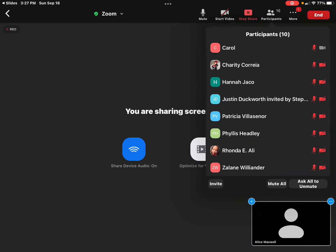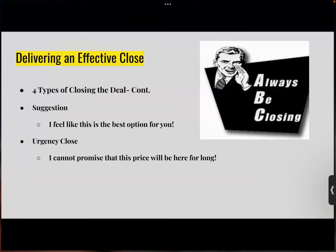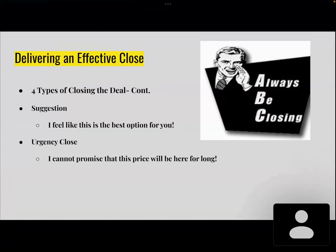Quick question from the audience: can you repeat the 4-2-1? The 4-2-1 process is four posts about travel — that can be anything from travel memes, best beaches, bucket lists, updates about COVID or places they can vacation. Then two posts about yourself: a trip you've taken in the past, something you wanted to do, talking about your business, how you love what you do, things like that. And then that one hard sell.